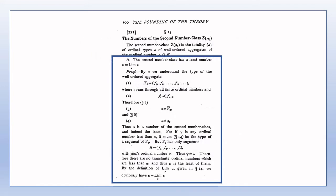On page 160, Theorem A shows that omega, being the least number of the second number class, is also the smallest transfinite ordinal. Recall that the first number class is the aggregate of all finite ordinal numbers. The representation of omega as the limit of the fundamental sequence of finite ordinal numbers, given at the bottom of page 160, will often prove to be quite a useful representation.